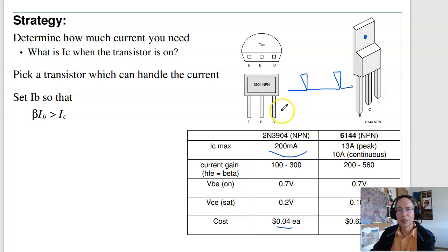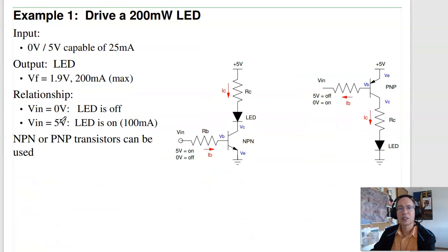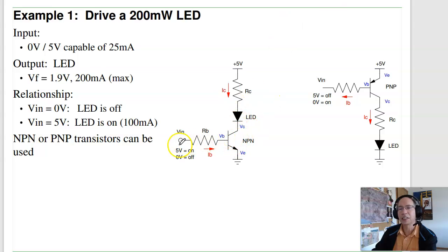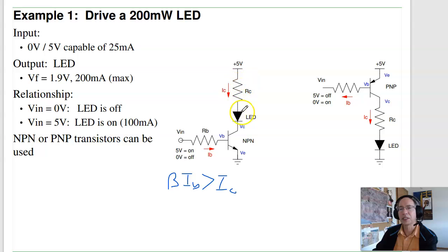The trick to using the NPN as a switch is having enough base current — pick the base current so that beta times IB is more than the collector current you need. For example, suppose I want to drive a 200-milliamp LED. The first step is to ignore the transistor and come up with a circuit that powers the LED directly: you need a voltage source and a resistor to limit the current. Once you have that circuit, add the transistor as an electronic switch. When input voltage is zero, the transistor is off; when it's 5 volts, you get base current and the transistor saturates.